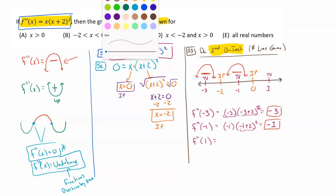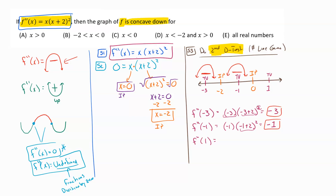Then we go ahead and plug in one. Plugging one into our second derivative gives one times (one plus two) squared. That's one times three squared, and three squared is nine, so we end up with nine. This is positive, so this region is concave up like a cup.